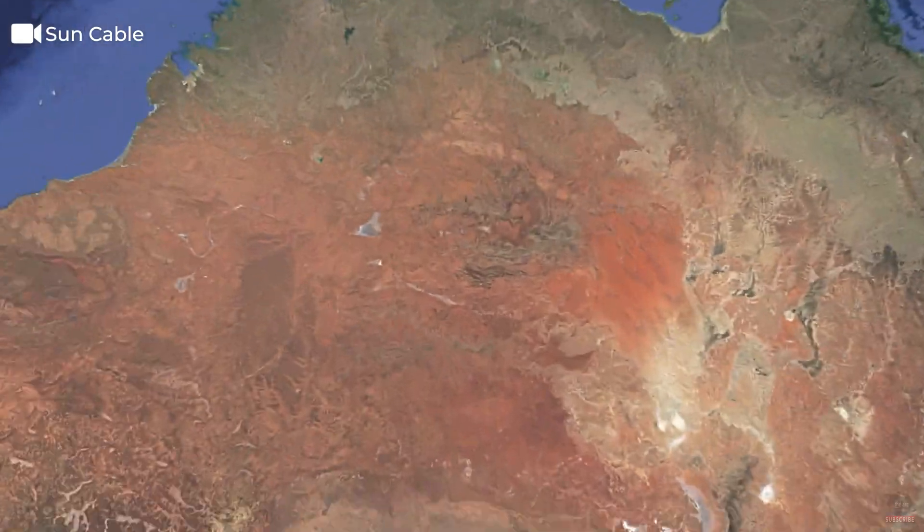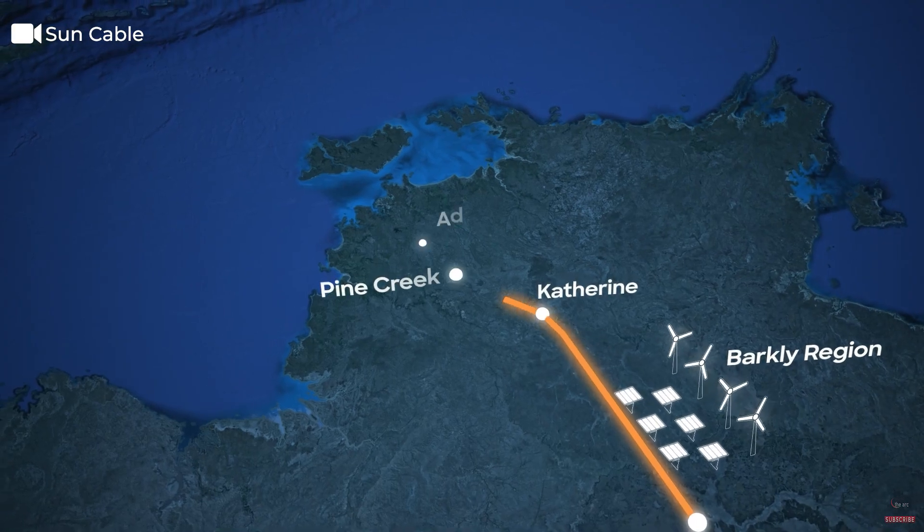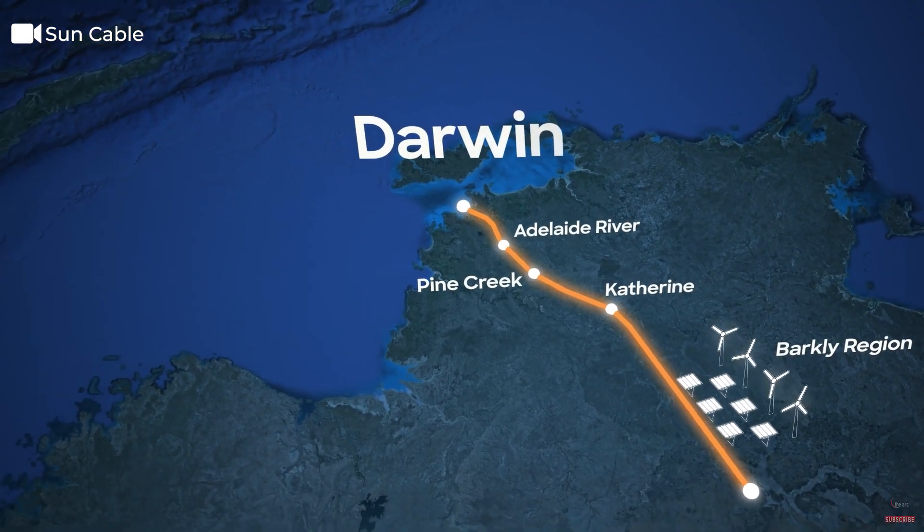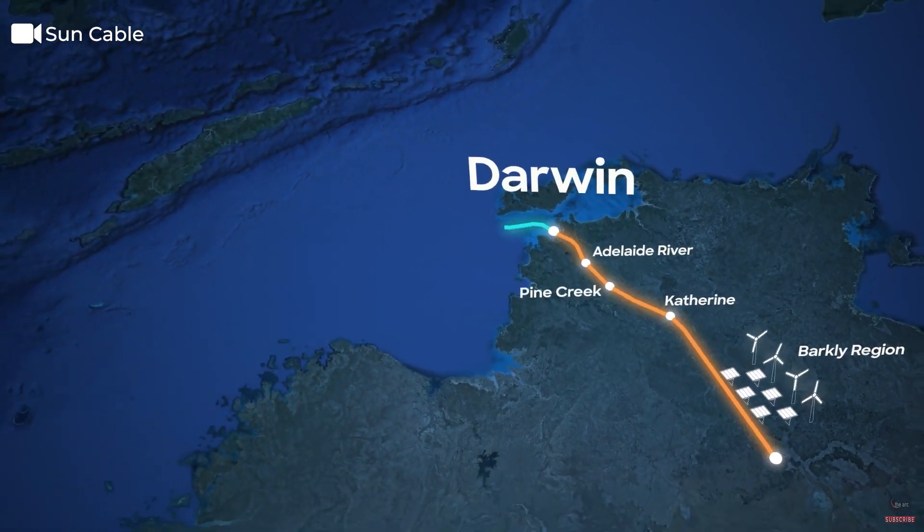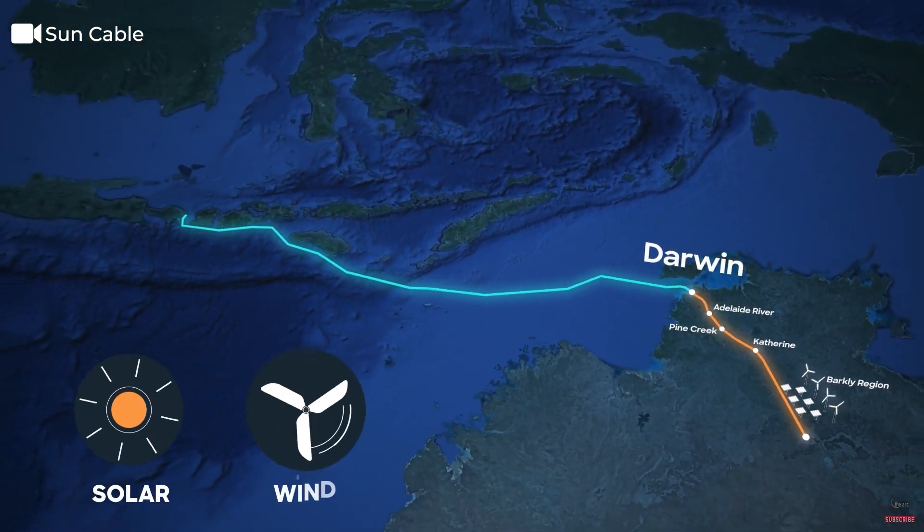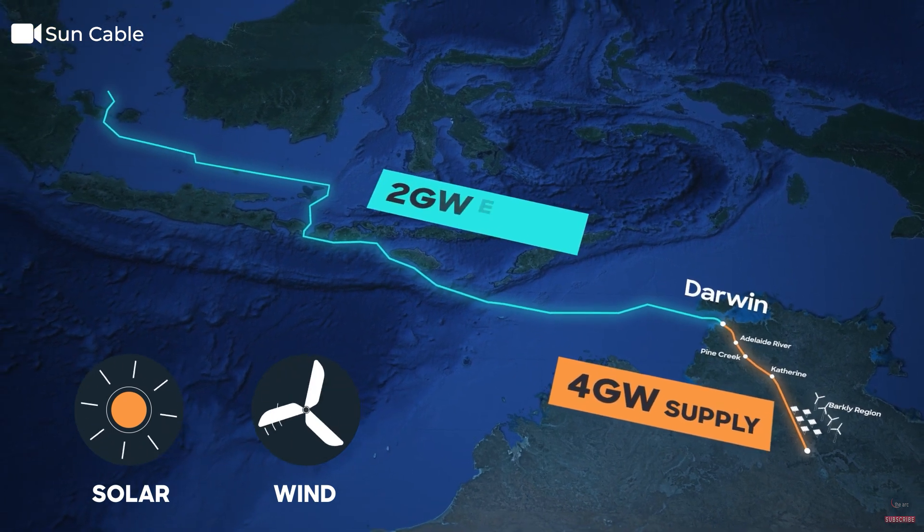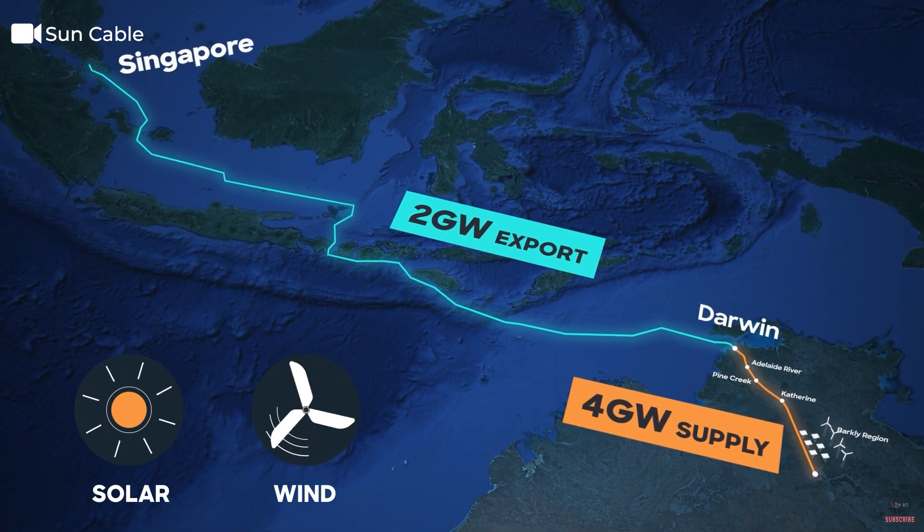It proposes to develop the world's largest renewable energy generation and battery storage facility in Australia's northern territory and deliver up to 6 GW of 24-7 green electricity. 4 GW to be supplied to Darwin in Australia and 1.75 GW to be transmitted to Singapore. It will amount to about 15% of Singapore's electricity needs. Electricity demand in the Asia-Pacific is set to increase by 70% by 2040 and more than double by 2050.